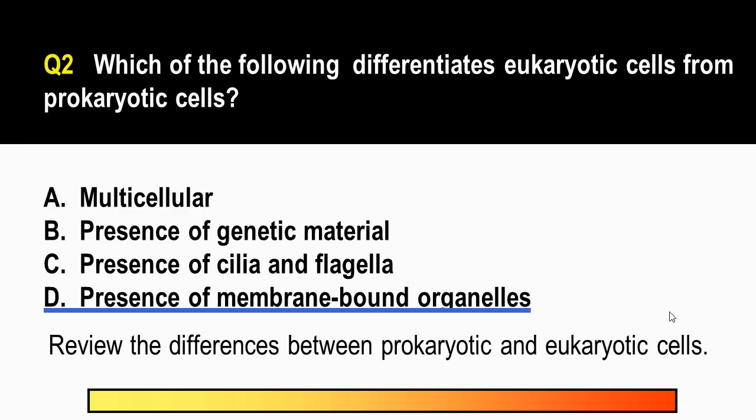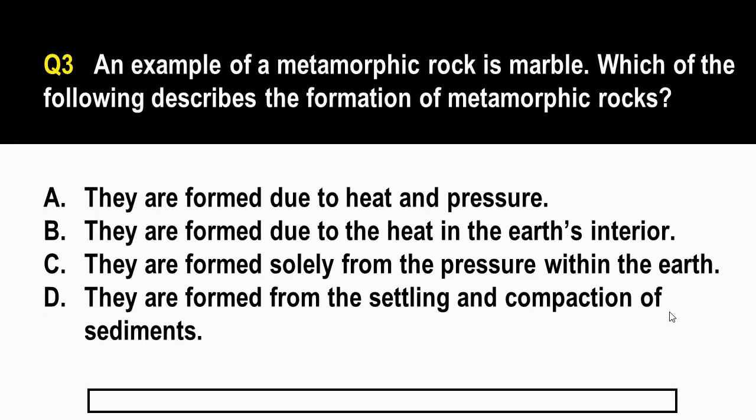For the third question, an example of a metamorphic rock is marble. So marami nito sa Romblon. The question is, which of the following describes the formation of metamorphic rocks? A. They are formed due to heat and pressure. B. They are formed due to the heat in the earth's interior. C. They are formed solely from the pressure within the earth. D. They are formed from the settling and the compaction of sediments.